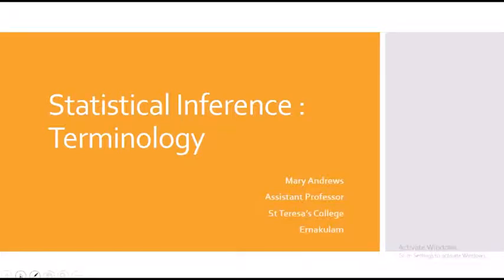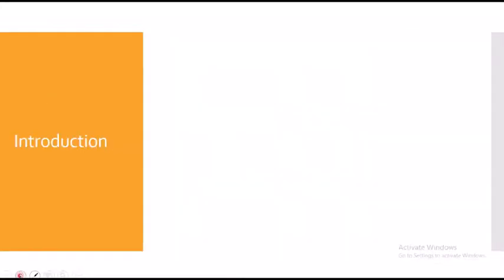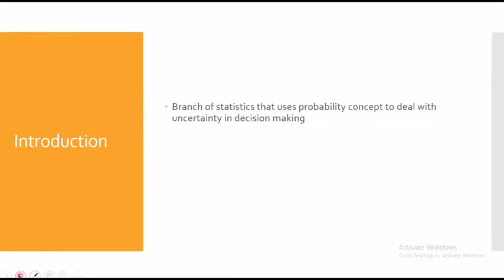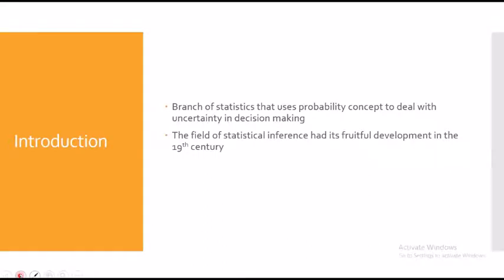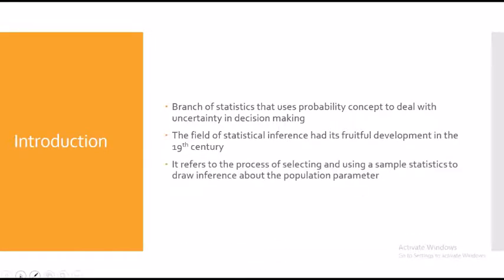Today we will be learning about statistical inference — the important terminologies, notations, and definitions used in it. Statistical inference is that branch of statistics which is concerned with using probability concepts to deal with uncertainty in decision making. It refers to the process of selecting and using a sample statistic to draw inference about a population parameter based on a subset of it — the sample drawn from the population.